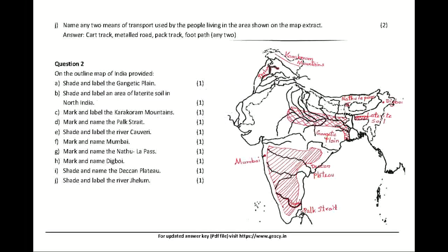Name any two means of transport used by the people living in the area shown on the map extract. Answer: Cart track, metalled road, pack track, footpath — any two.